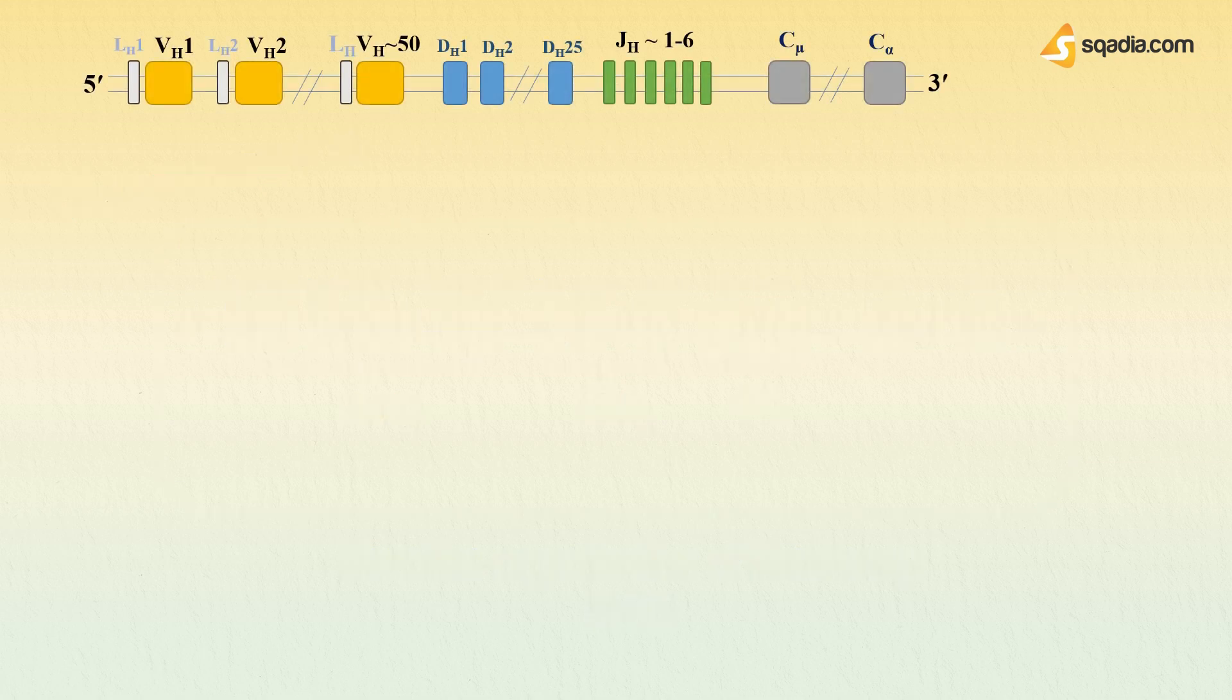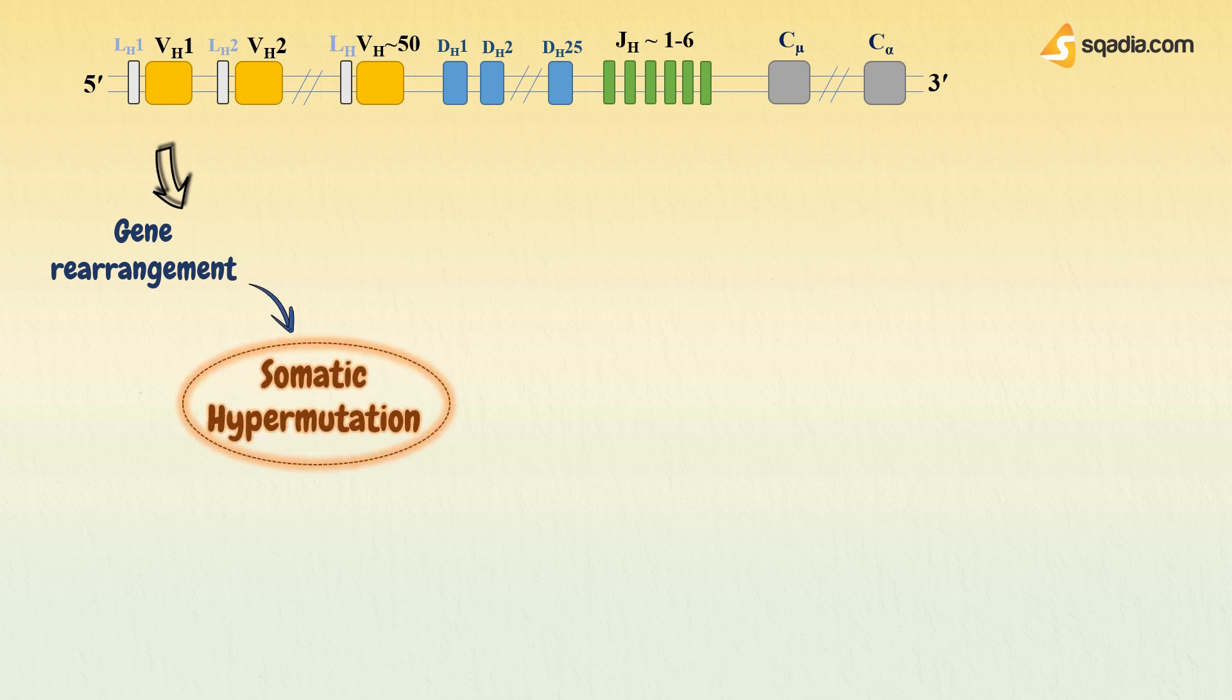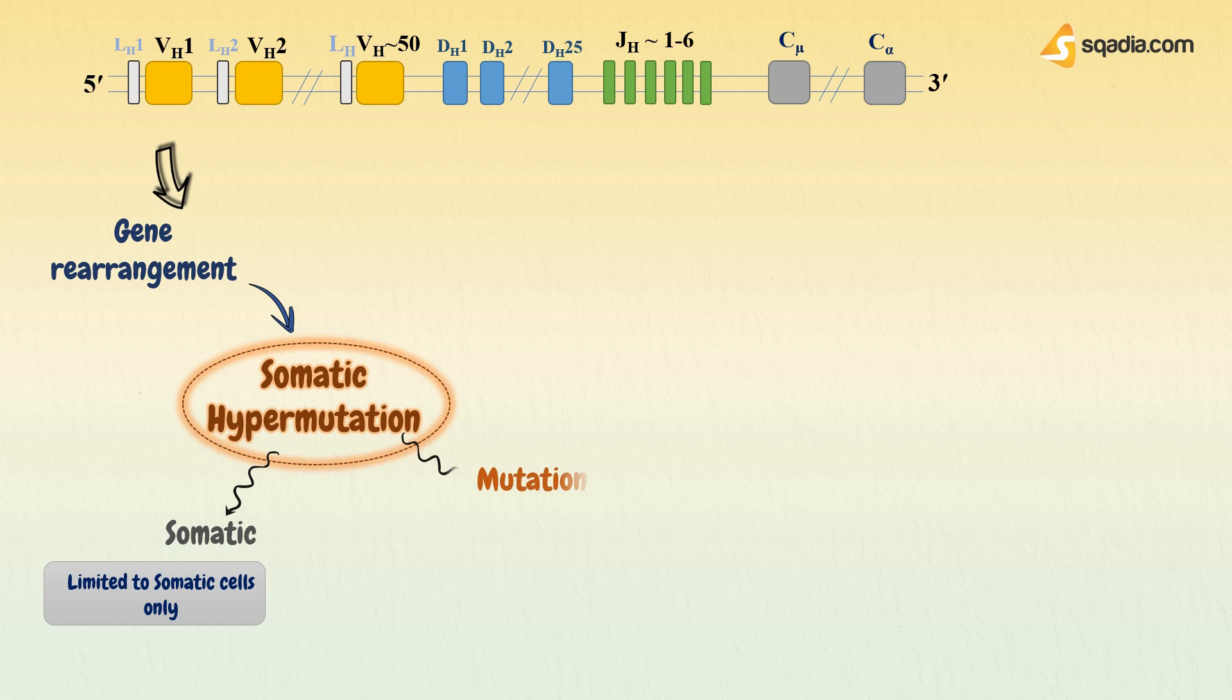These gene segments undergo multiple rearrangements or recombinations that are called somatic recombinations. The process involved here is called somatic hypermutation. The word somatic comes from the fact that this process is limited to somatic cells only and not germ cells. That means it is not transmitted to the next generation.